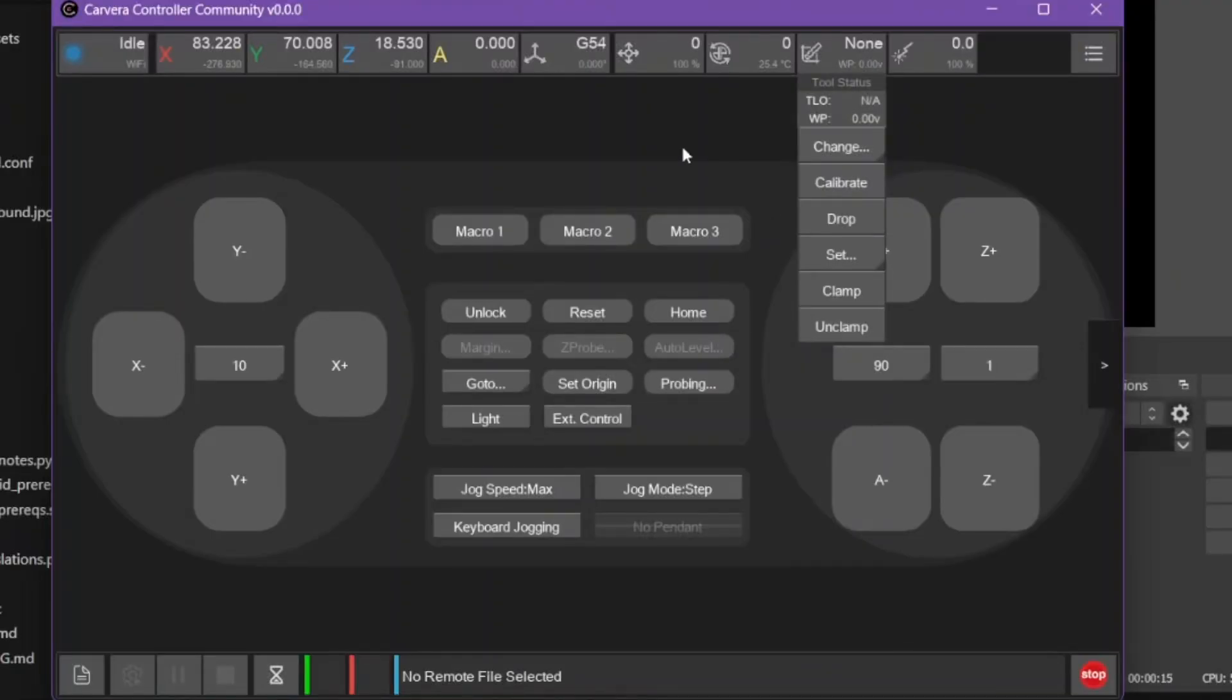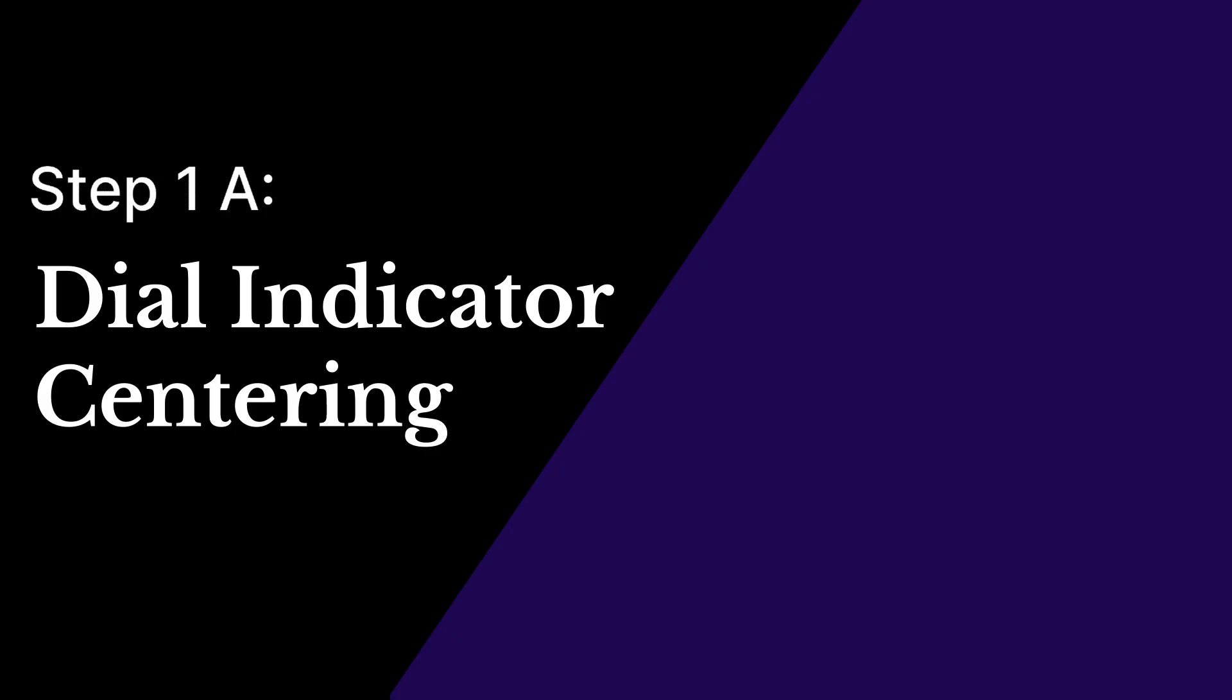As always, any time that you are using the 3-axis probe, you want to set the tool to 3D probe, which can be done with the set tool dropdown.